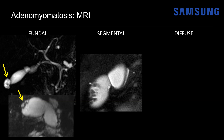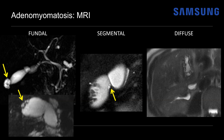For the segmental type, notice the figure-eight hourglass configuration with annular narrowing at the mid portion — the waist of the gallbladder — and again we have these cystic spaces in a pearl necklace pattern. Because of increased stasis within the proximal aspect of the gallbladder, there are multiple T2-dark gallstones. For the diffuse type, on an axial T2-weighted image there is diffuse gallbladder wall thickening with T2-bright cystic spaces throughout, yielding that pearl necklace configuration of adenomyomatosis.